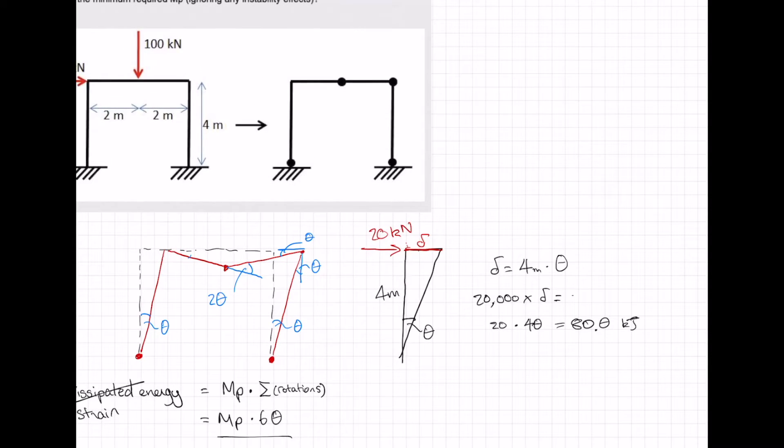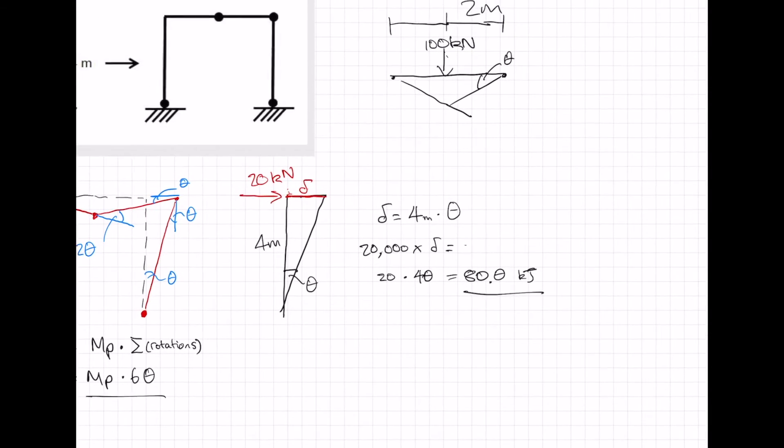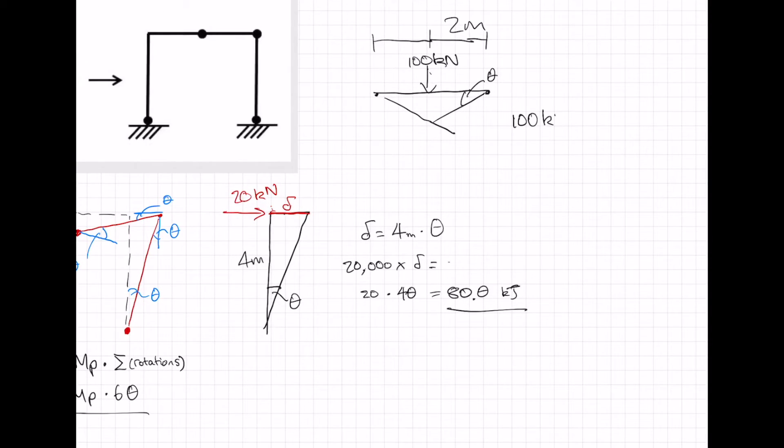And then we need the work done by the top one as well up here. That distance there is two meters. This one is 100 kilonewtons. The force is constant, so this one is 100 kilonewtons times this distance here. So that distance is two times theta. This work done here is 200 theta kilojoules.